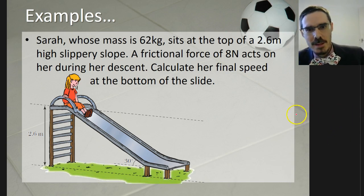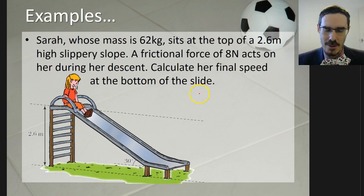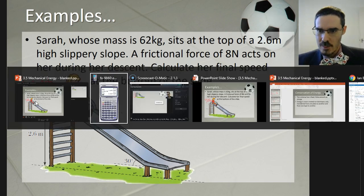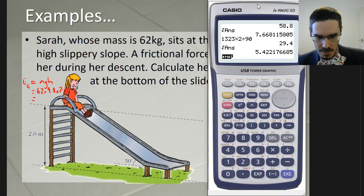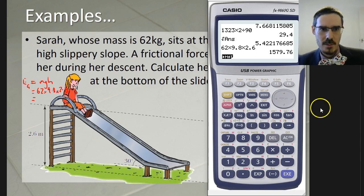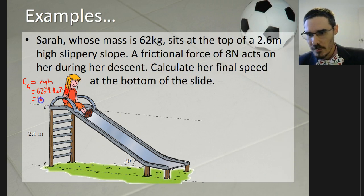So here's another example. This time we've got some friction acting. Sarah, whose mass is 62 kilograms, sits at the top of a 2.6 metre high slippery slope. There's a frictional force of 8 newtons acting during the descent. Calculate her final speed at the bottom of the slide. Well, we can work out her gravitational potential energy at the top. Her gravitational potential energy is mass times gravity times height. That was 62 times 9.8 times 2.6. 1580 joules.